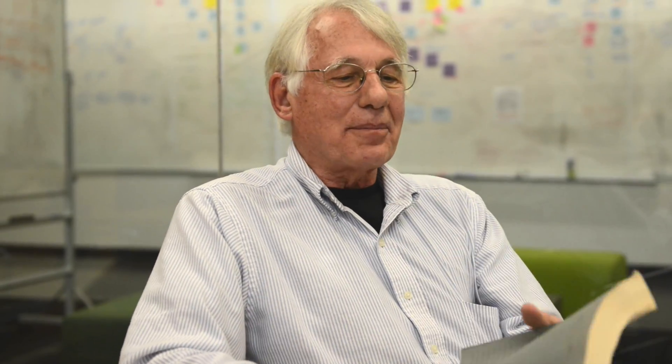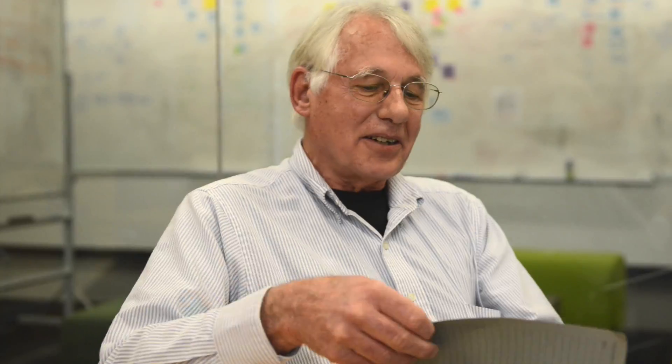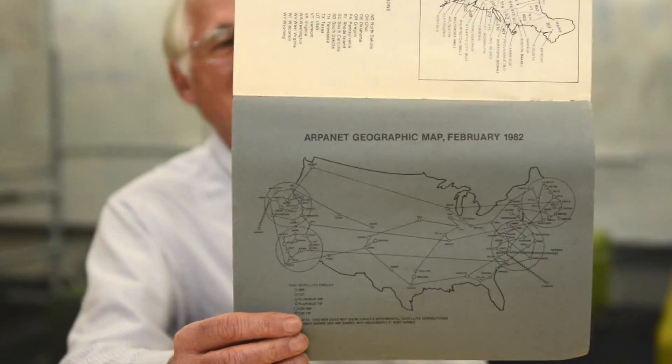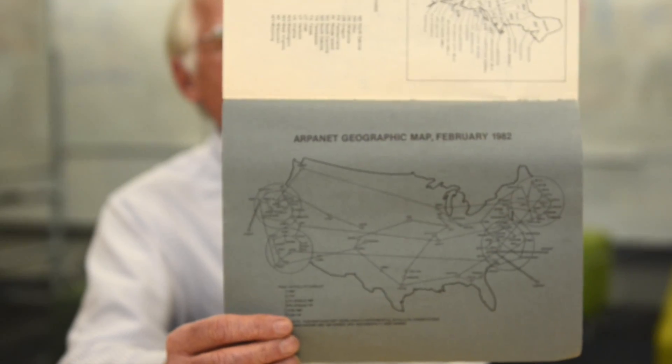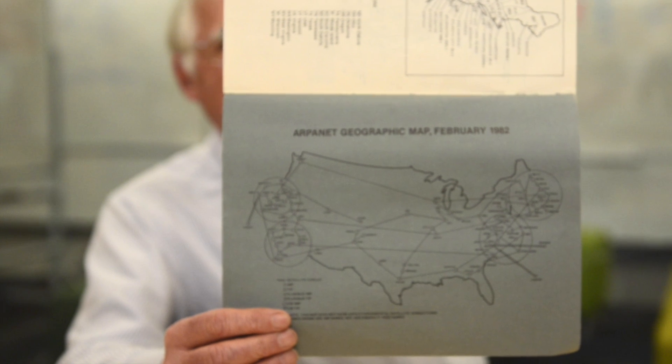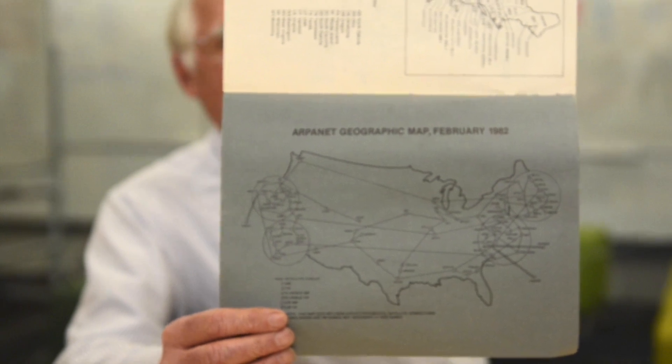There are some interesting maps here. If you can see this, this was the internet in 1982 — all of the nodes of the ARPANET.